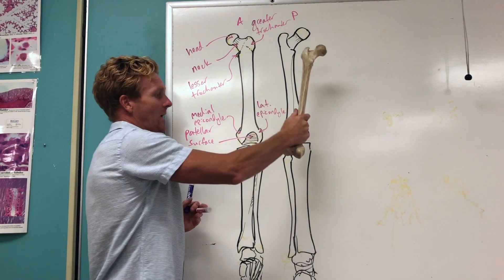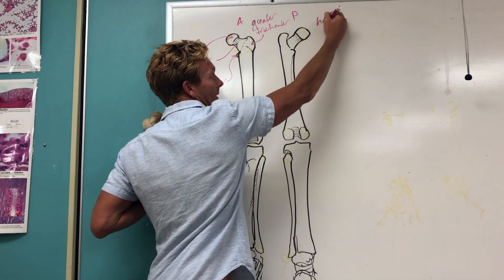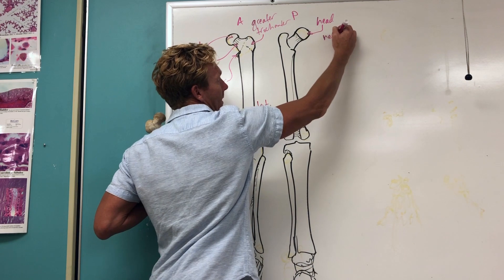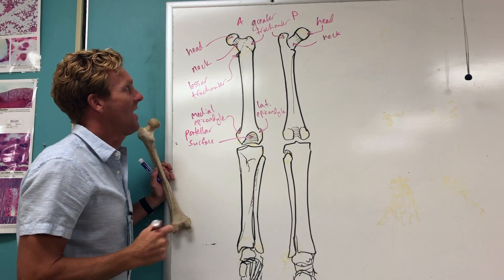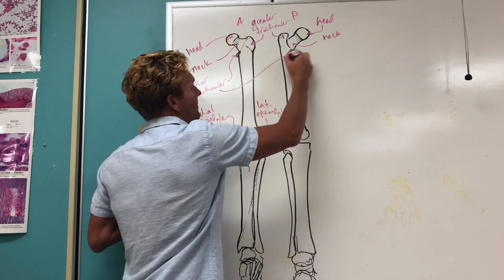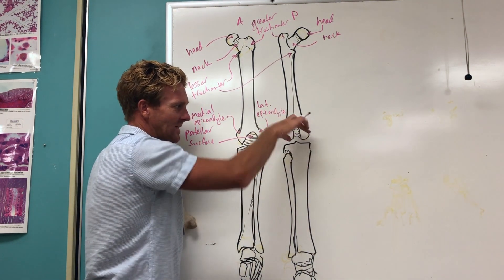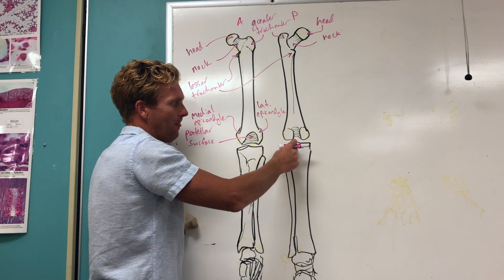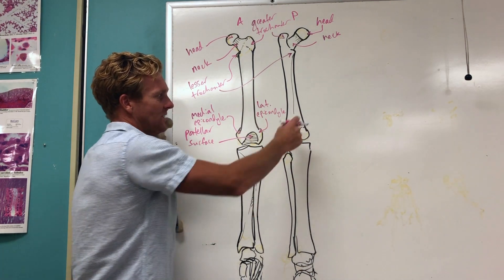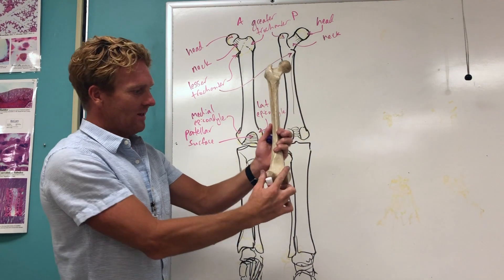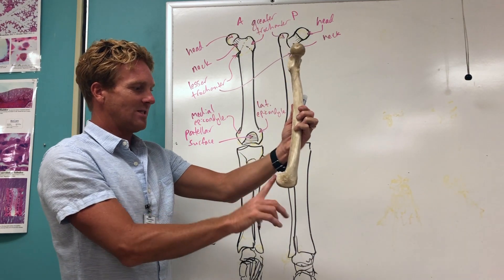If you were to flip this over and look at the posterior side, you're going to see some different features, but also some similar ones. You still have the head located right here, also the neck. You're also going to see the greater trochanter right here — it's much more pronounced on the posterior side — in addition to the lesser trochanter located right there. As we go down, this is where we see the two surfaces that really roll against the top of the tibia, forming the knee. So these are the two condyles; the epicondyles were just the bulges on top of these guys.